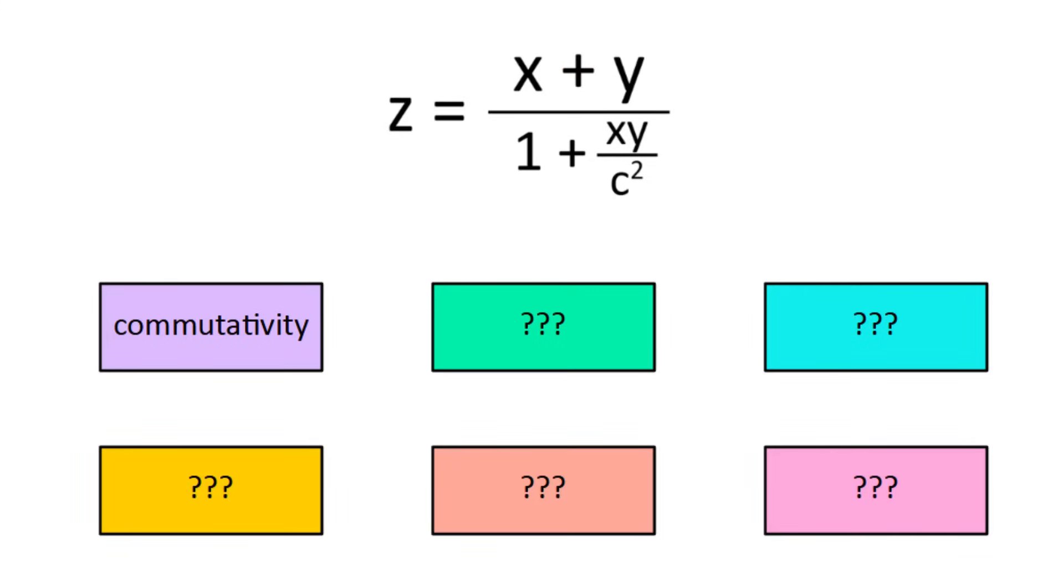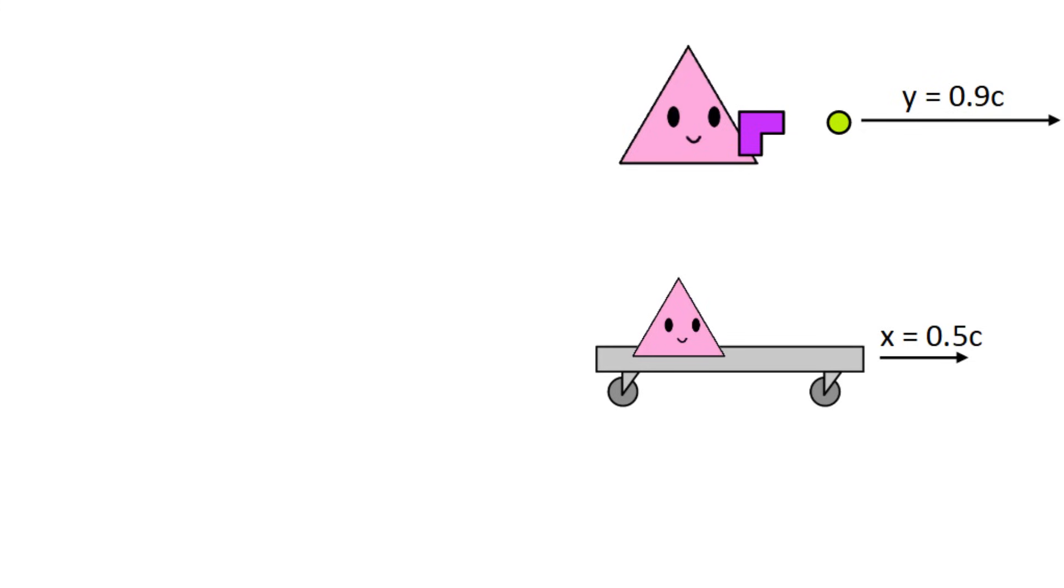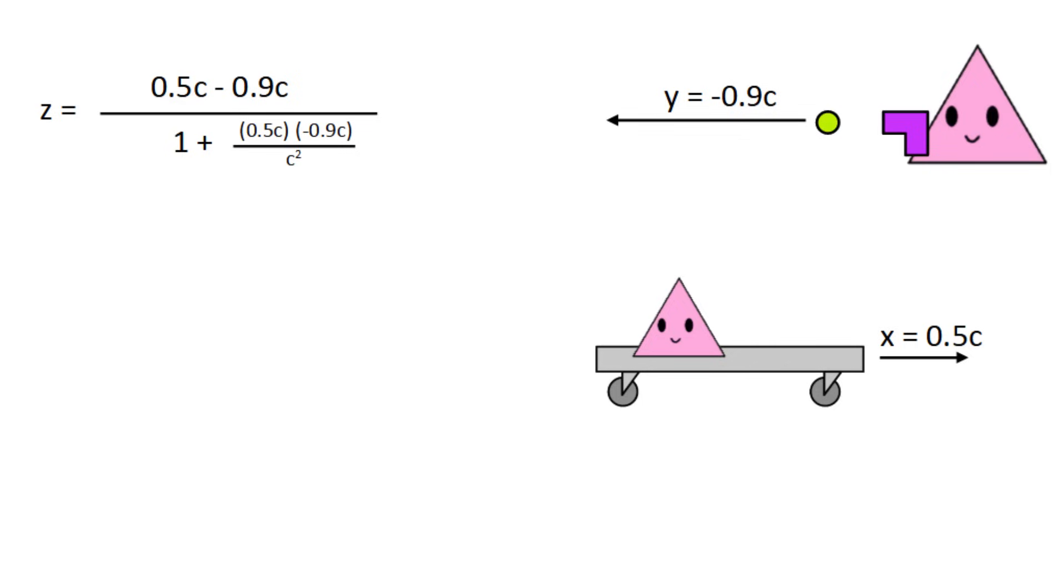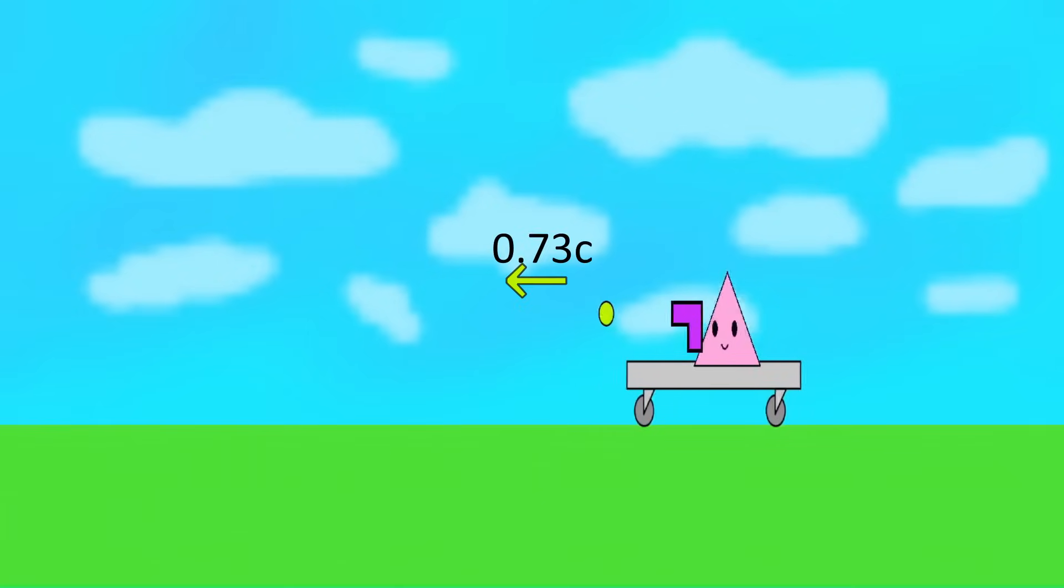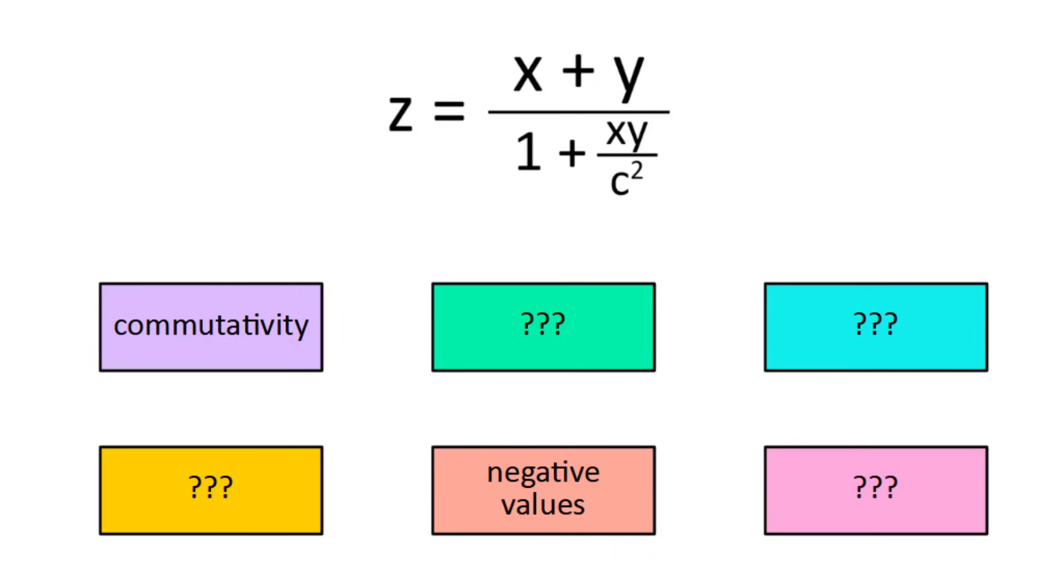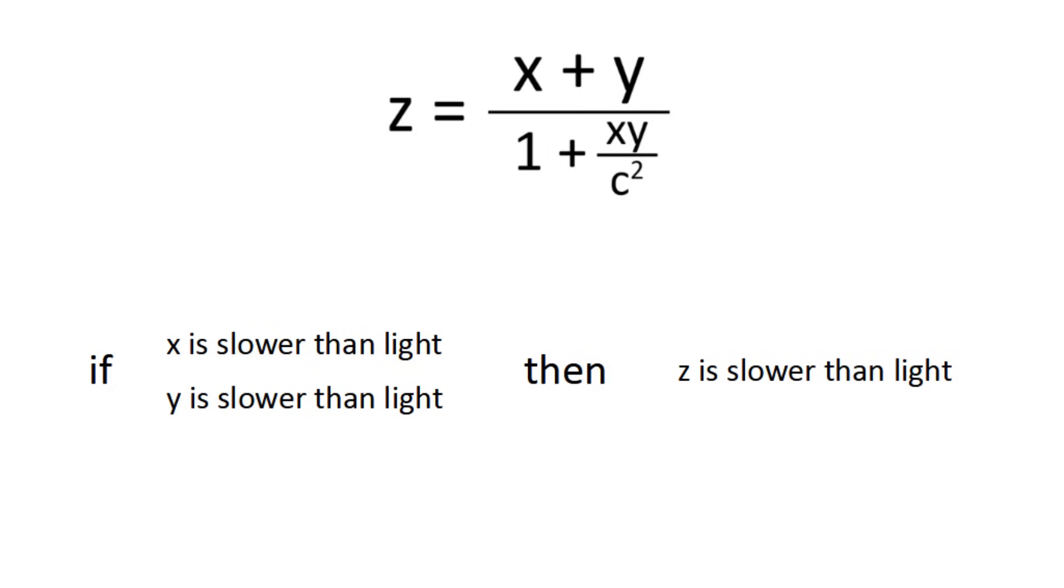Another feature is that it also works with negative numbers. If that second projectile is fired to the left, we just have to plug in negative 0.9c. This time the denominator is less than 1, but everything still works out, and we find that in our reference frame it goes left at 0.73c. Now as I explained earlier, if x and y are both slower than light, z will be 2.